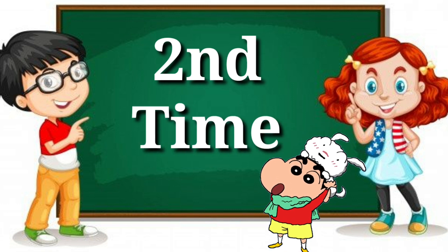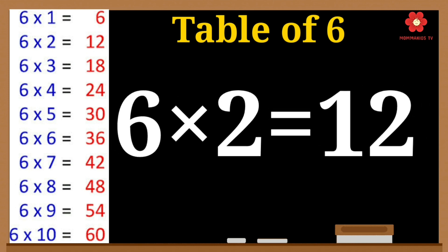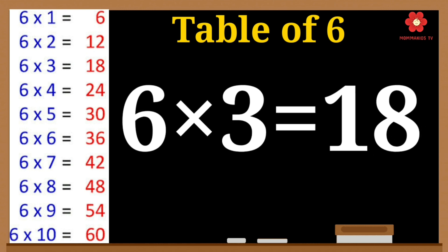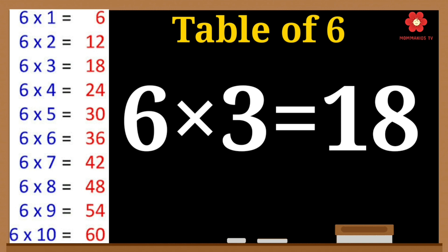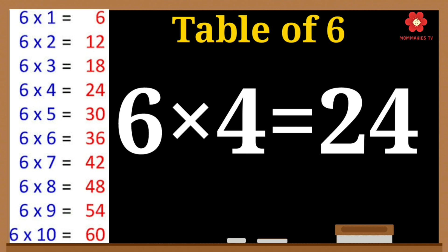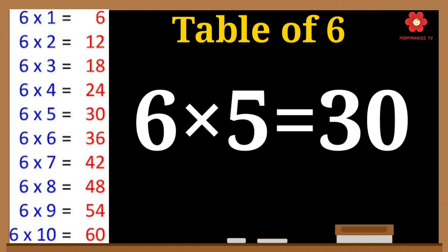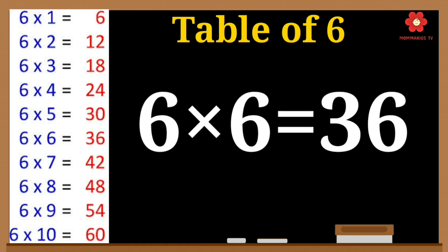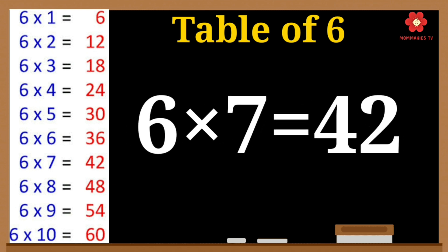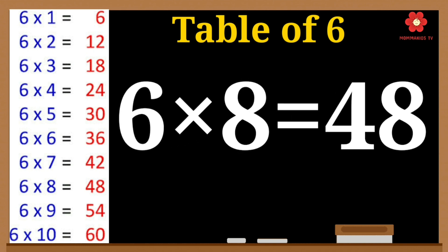6 ones are 6. 6 twos are 12. 6 threes are 18. 6 fours are 24. 6 fives are 30. 6 sixes are 36. 6 sevens are 42.